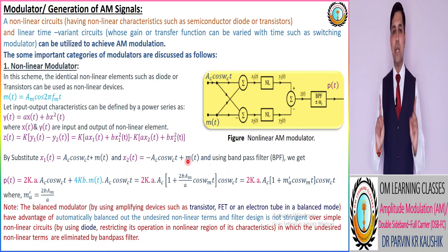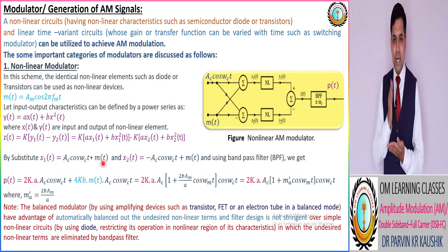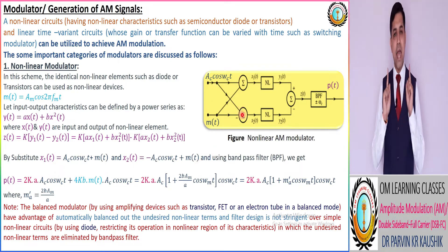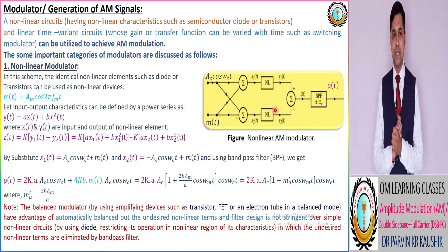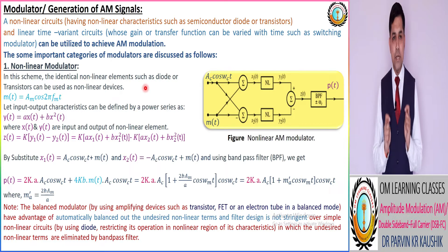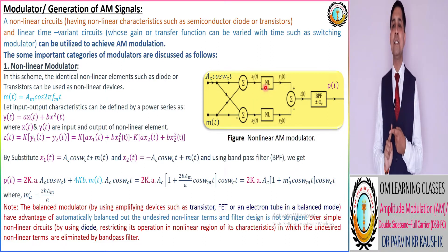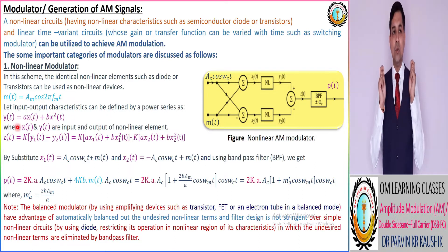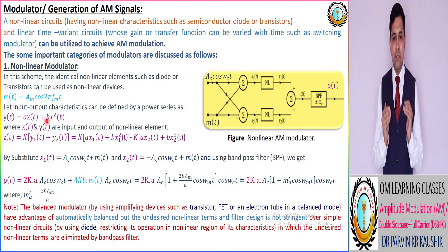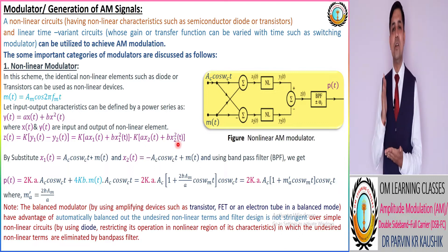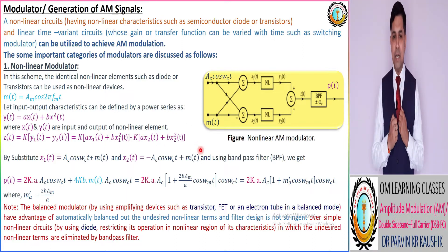Always remember: for an AM modulator the carrier signal is added or subtracted from the modulating signal. The x1(t) and x2(t) signals are then passed through the non-linear circuit. Identical non-linear elements such as a diode or transistor can be used as the non-linear device. By utilizing the power series which defines the input-output characteristics of the non-linear device — Y(t) = A·x(t) + B·x²(t) — we get the signals y1(t) and y2(t).